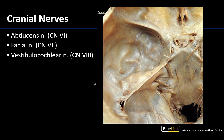The abducens nerve or cranial nerve 6 is going to be found on the clivus or the basilar part of the occipital bone. Note that this is not where it is exiting the skull — it will actually exit via the superior orbital fissure after traversing the lumen of the cavernous sinus on its way to the lateral rectus muscle. This relationship with the basilar part of the occipital bone will help you identify this nerve.